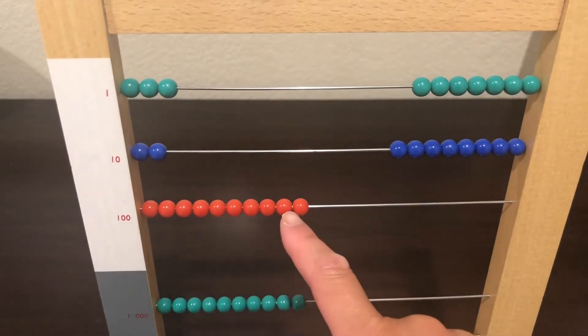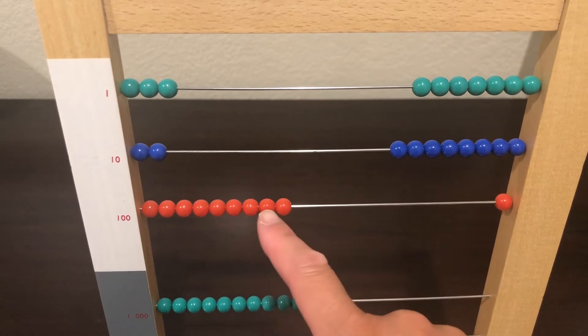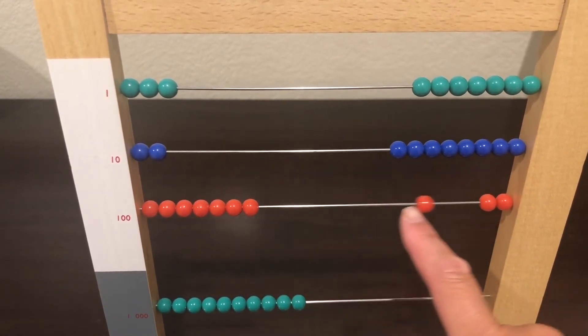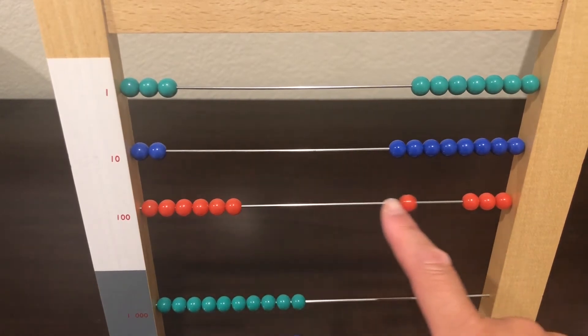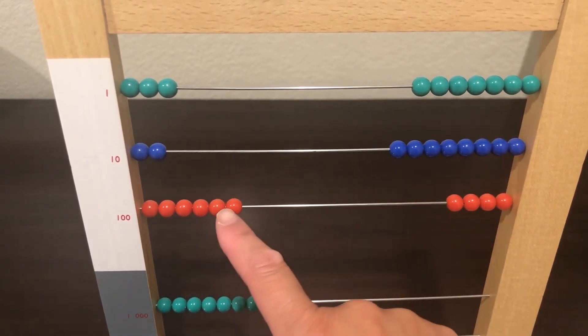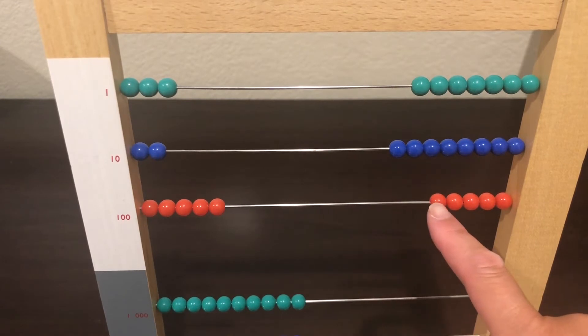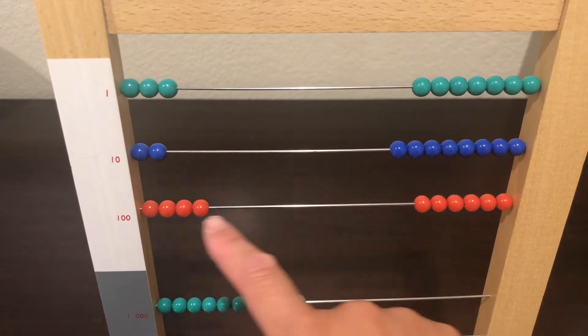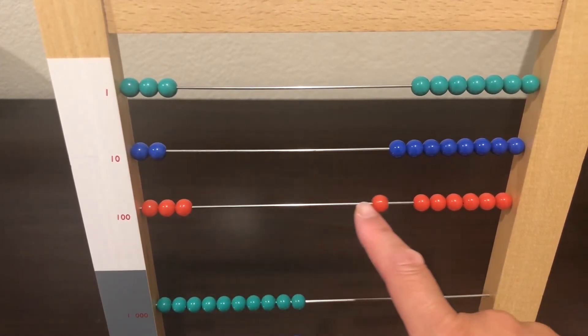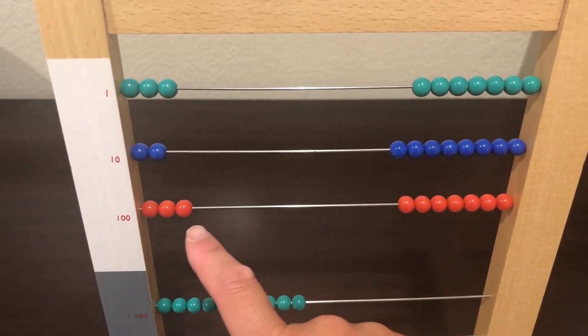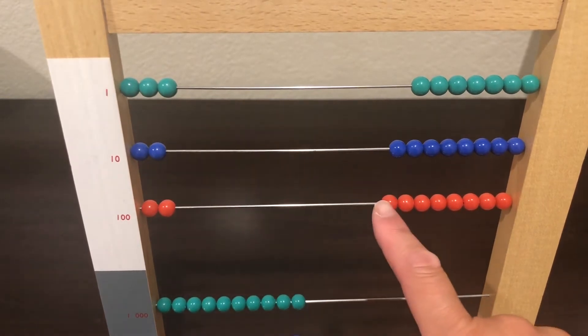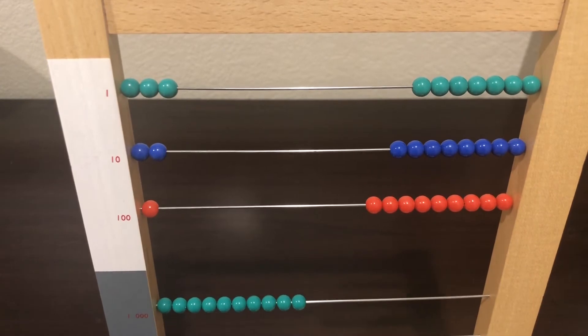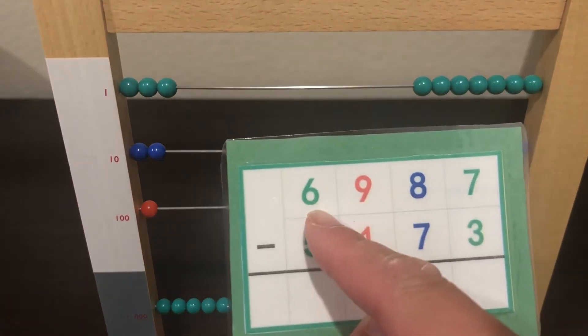900. 100, 200, 300, 400, 500, 600, 700, 800, 900.